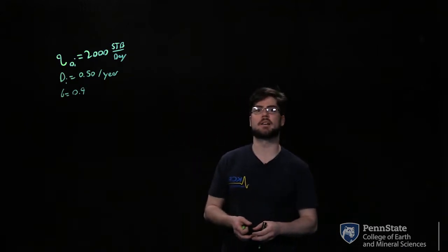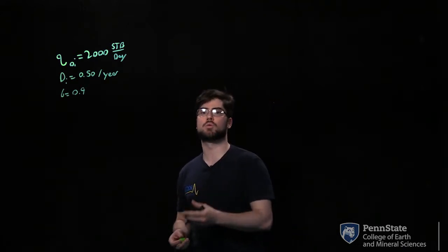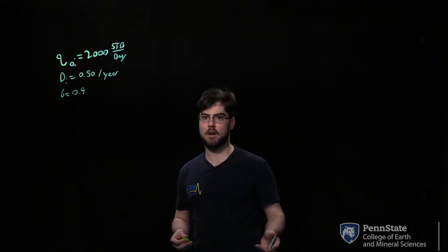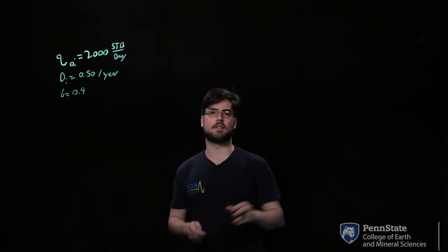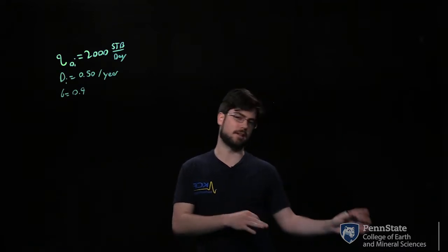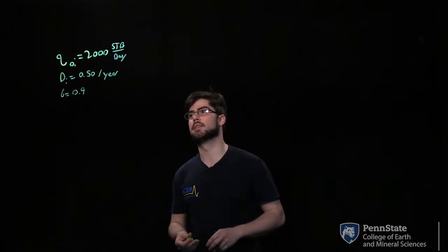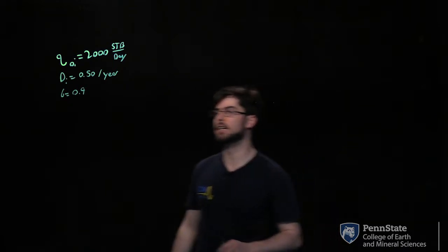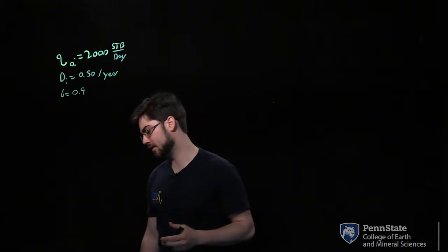You would use exponential decline in volumetric reservoirs. Hyperbolic, which we're going to be talking about, you'd use in non-volumetric reservoirs. Harmonic is more theoretical — it represents the best possible payout, but we really don't see that in practice. So we're going to be talking about hyperbolic in this case.